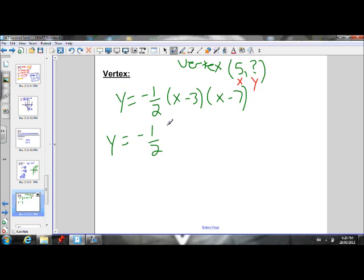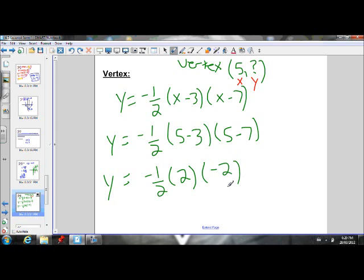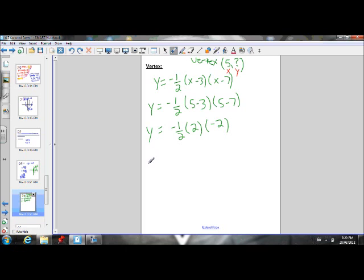So plug in 5 for x. Use our algebra skills. We get negative 1 over 2 times 2 times negative 2.